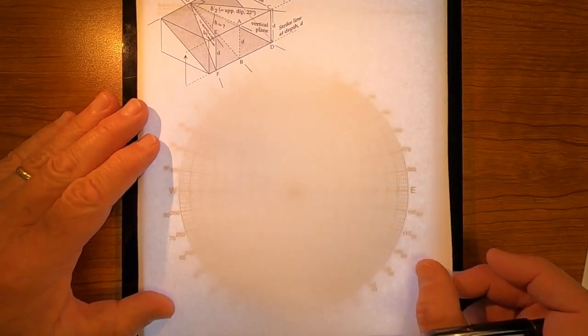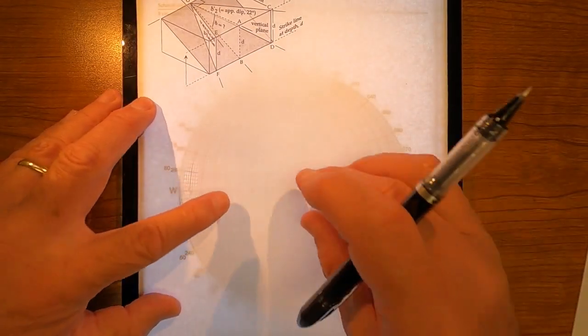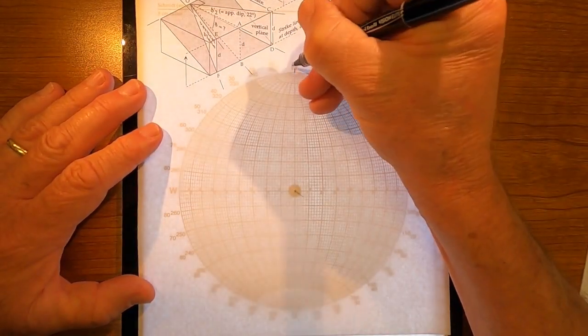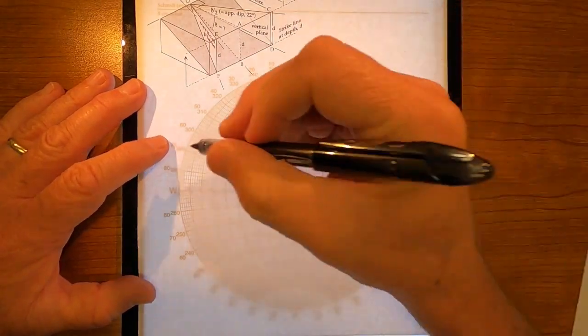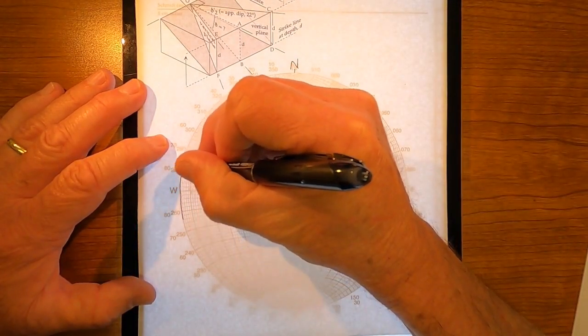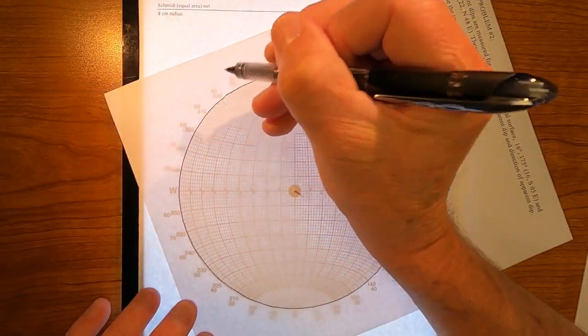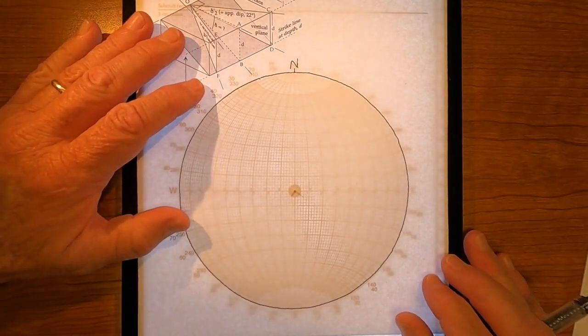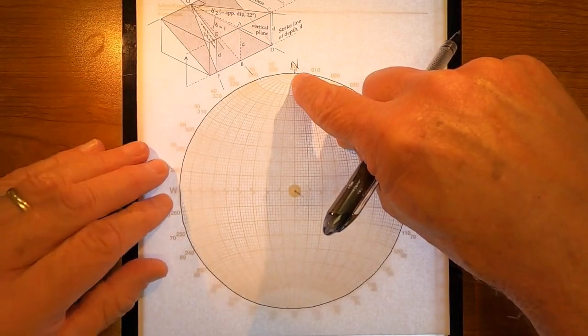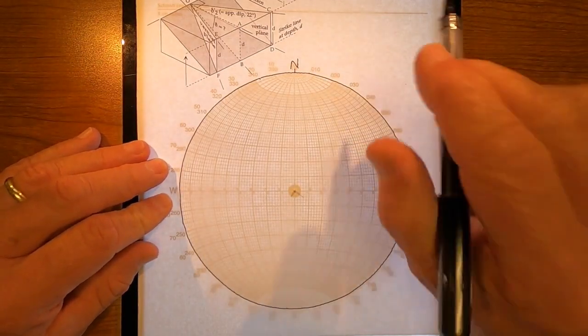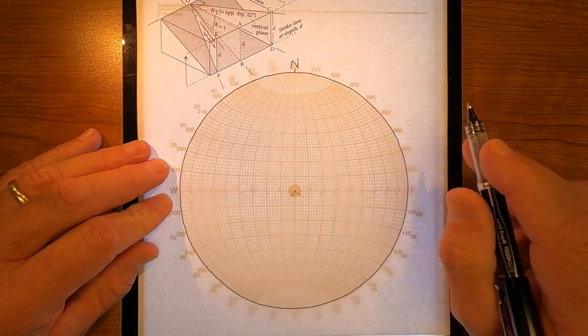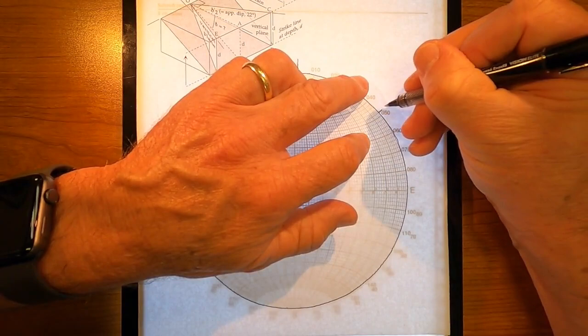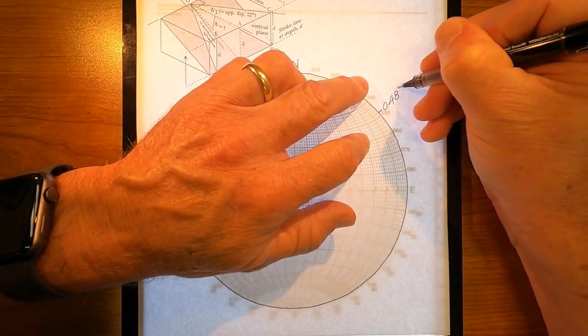Well, let's do it. Let me go ahead and put my overlay on the stereo net. As before, I'll mark north. As before, I'll trace my primitive great circle. All right, with my overlay back in position north, let me put my two compass directions. The given compass directions are 048, that's right here, 048.